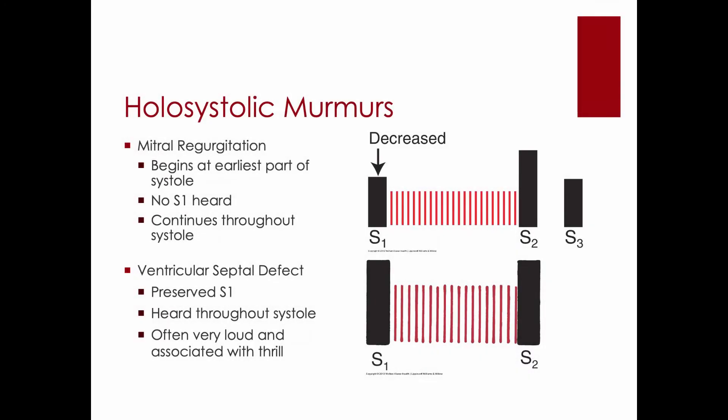Let's talk about holosystolic murmurs. Mitral regurgitation is the most common of the holosystolic murmurs. This happens all the way from the beginning of systole through the end of systole. And why does that happen?